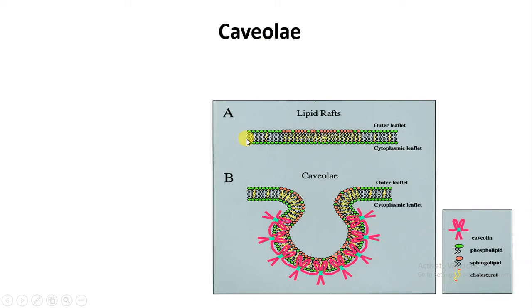Whenever we observe the plasma membrane, there is a special type of lipid raft present. A lipid raft is a kind of floating platform which leads to the invagination of the plasma membrane, giving rise to the caveolae.